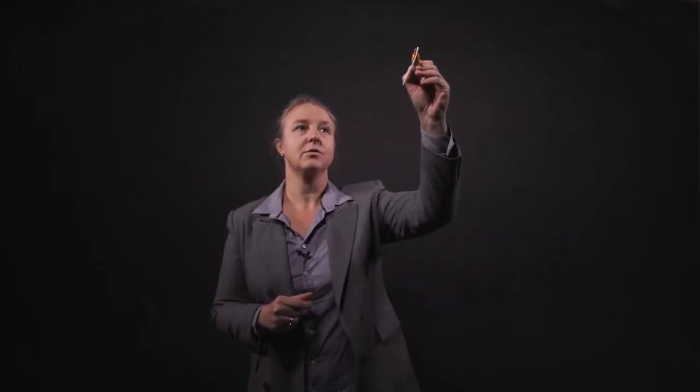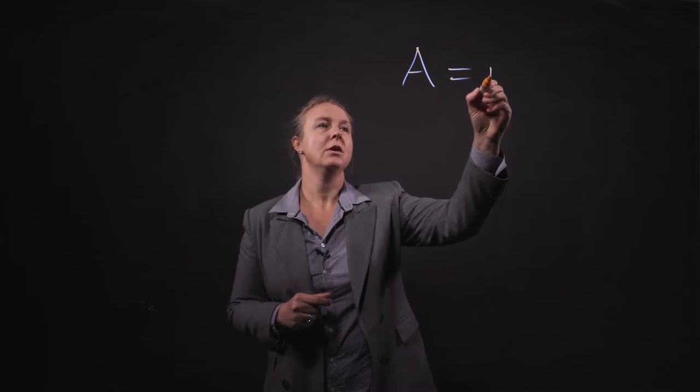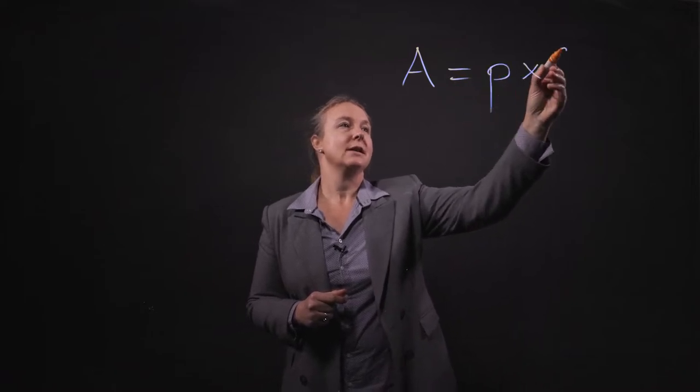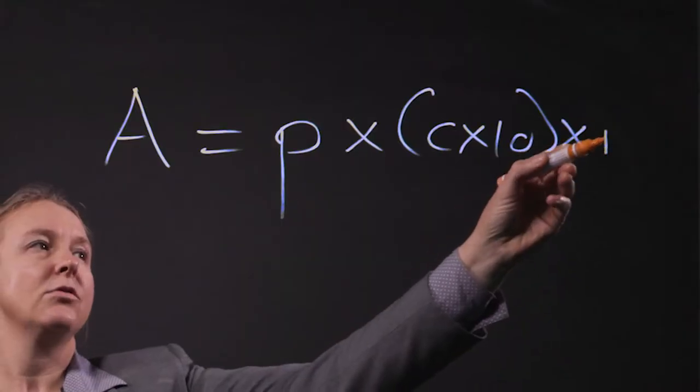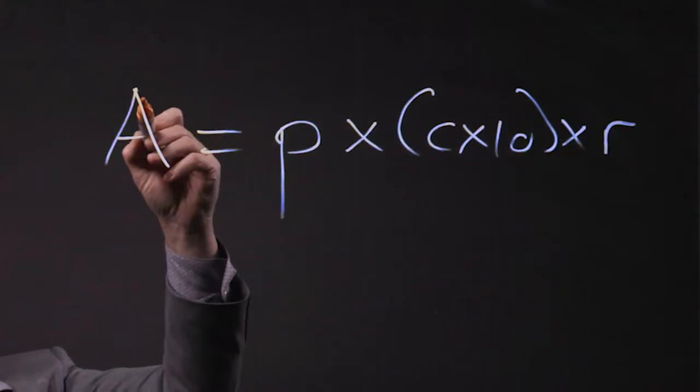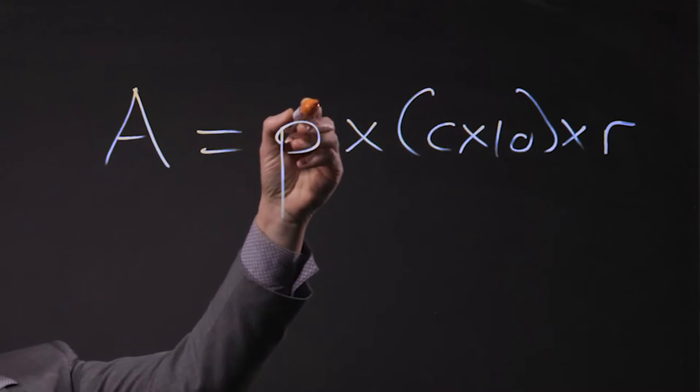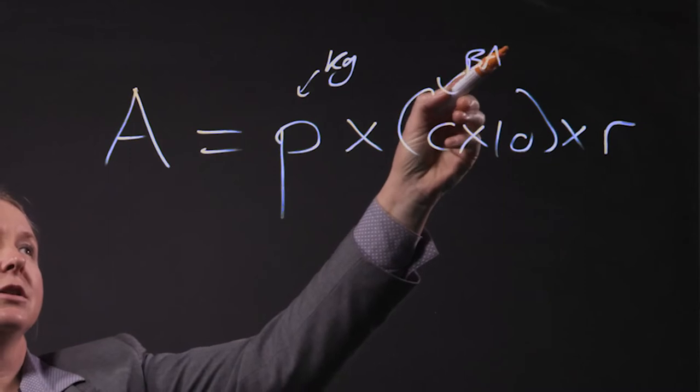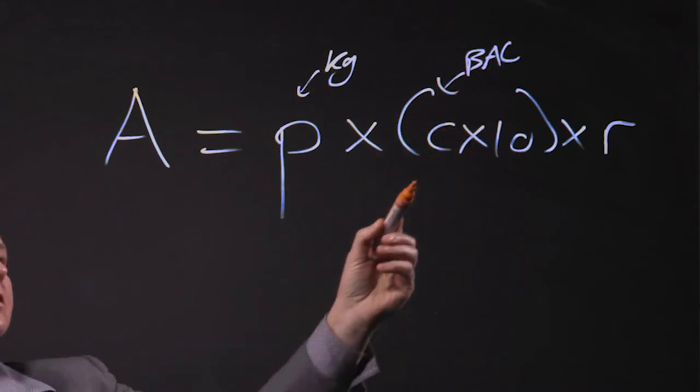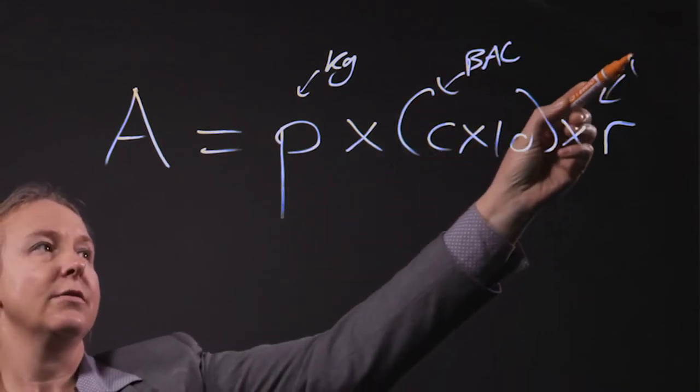Now let's look at Whitmark's formula and try and calculate maybe the amount of alcohol that someone has ingested. This would basically be the formula. Just to remind you again, this would be the amount of alcohol that's consumed, this would be the person's weight in kilograms, this would be the blood alcohol concentration in grams per hundred mils, and this would be the distribution factor.